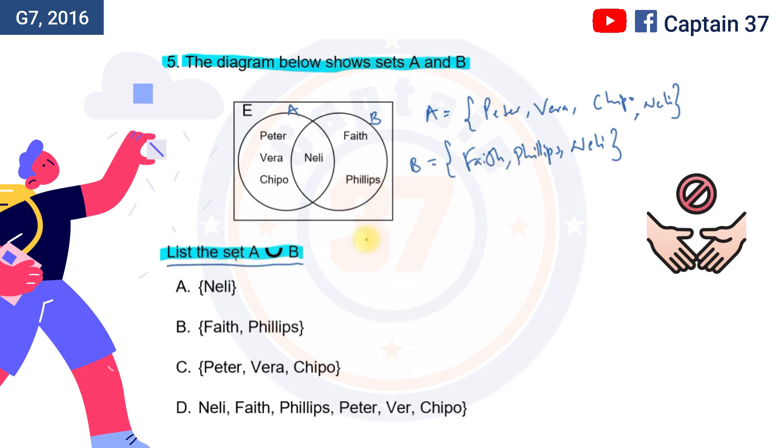They will obviously be this one, this one, and this one. So it will mean that there will be Faith, there will be Phillip, there will be Nelly, there will be Peter, there will be Vera, and there will be Chippo. And if you look at the answers that we've been given, you can straight away be able to see that the answer to this particular question is D.